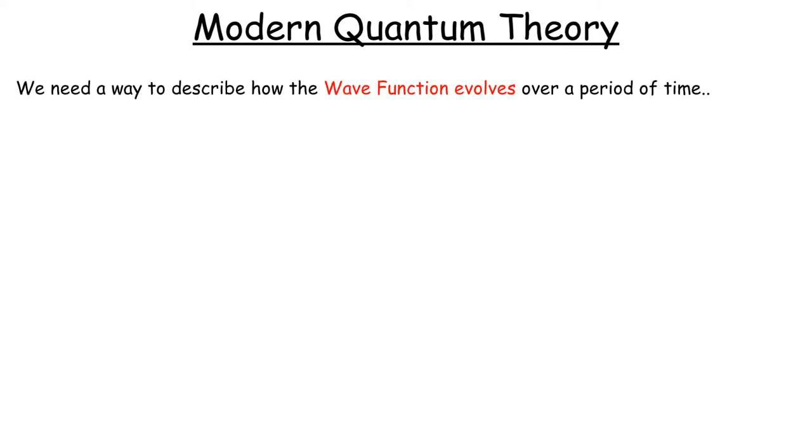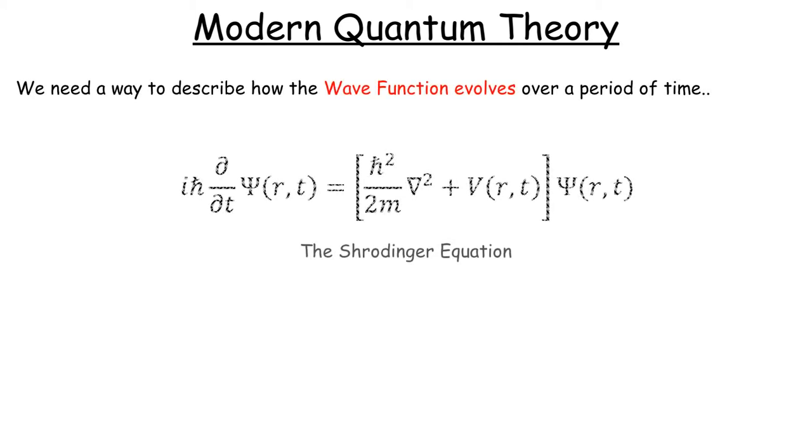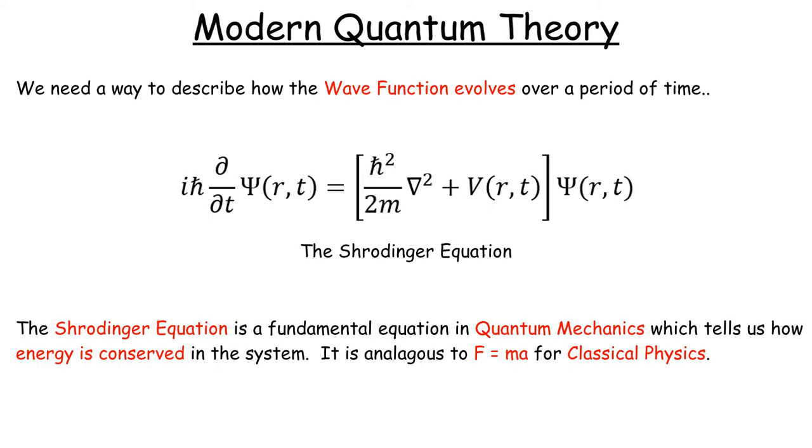So the way we describe how the wave-function evolves over time is to use the Schrodinger equation. The Schrodinger equation is analogous to Newton's second law, in which that we have a way to see how the kinetic energy is changing, i.e. what it's doing while moving, and the potential energy, i.e. where it is exactly.